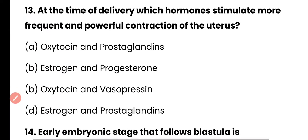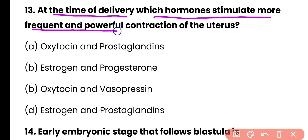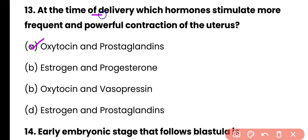Question 13: At the time of delivery, which hormones stimulate more frequent and powerful contractions of the uterus? Options: oxytocin and vasopressin, oxytocin and prostaglandin, or estrogen and prostaglandin. Correct answer is option A. At the time of delivery, maximum and powerful contraction of the uterus is caused by oxytocin as well as prostaglandin.